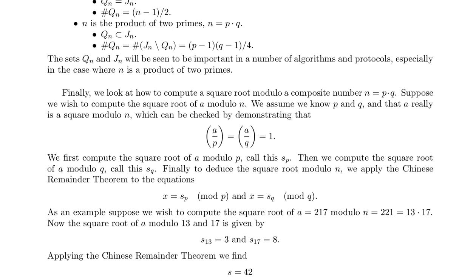As an example, suppose we wish to compute the square root of a equals 217 modulo n equals 221 equals 13 times 17. Now, the square root of a modulo 13 and 17 is given by s_13 equals 3 and s_17 equals 8.